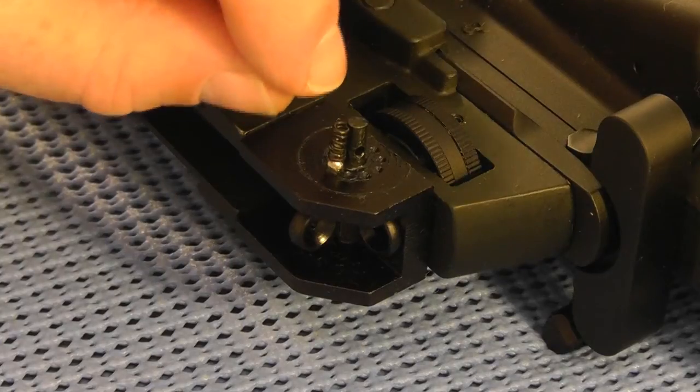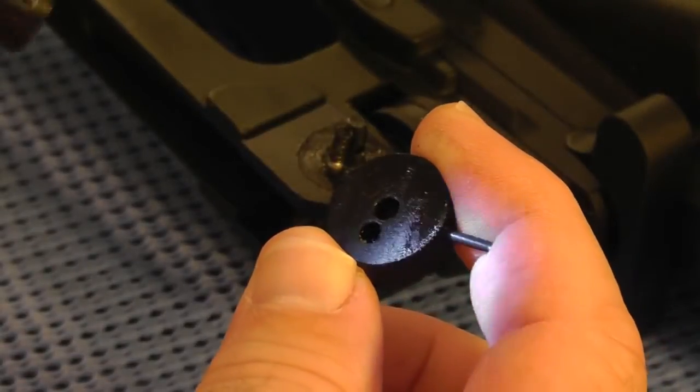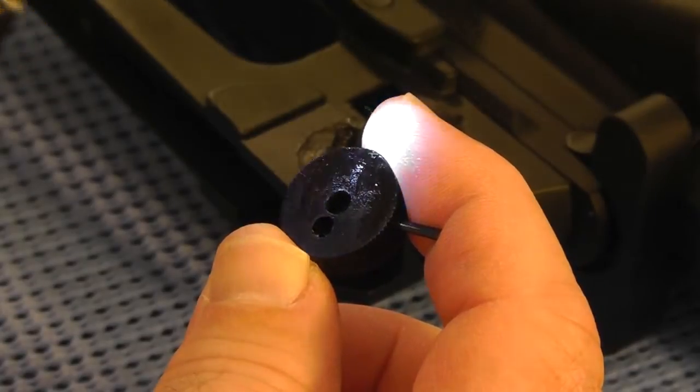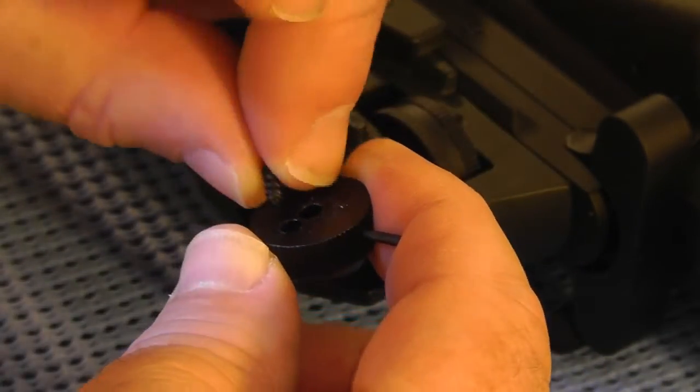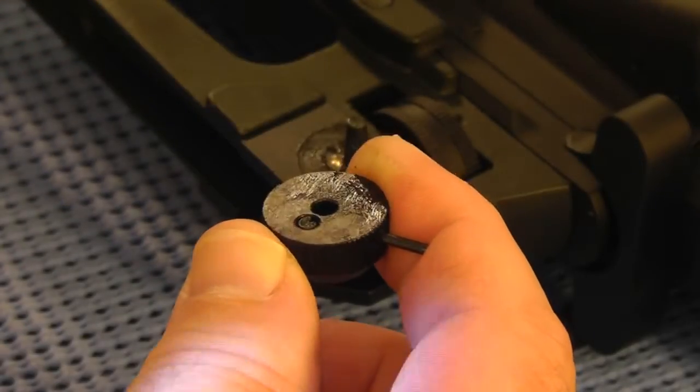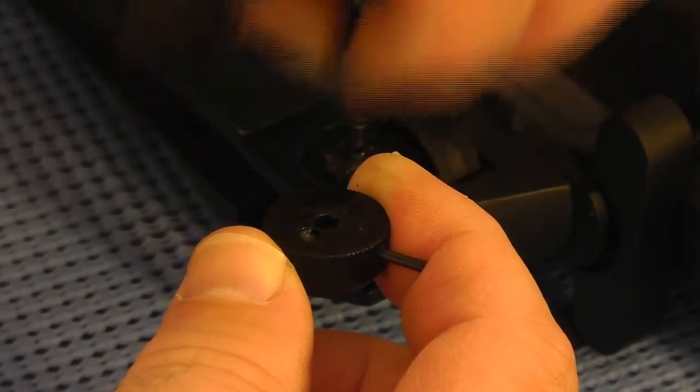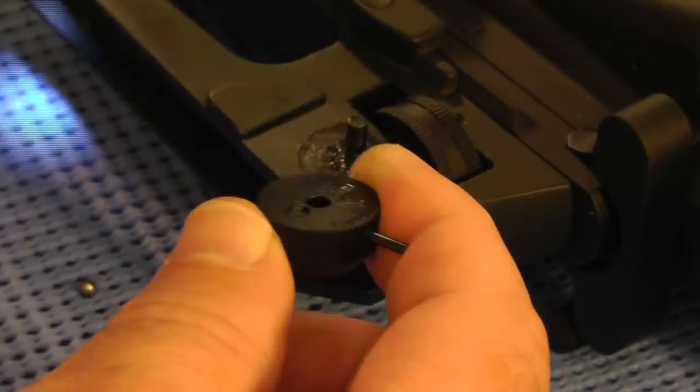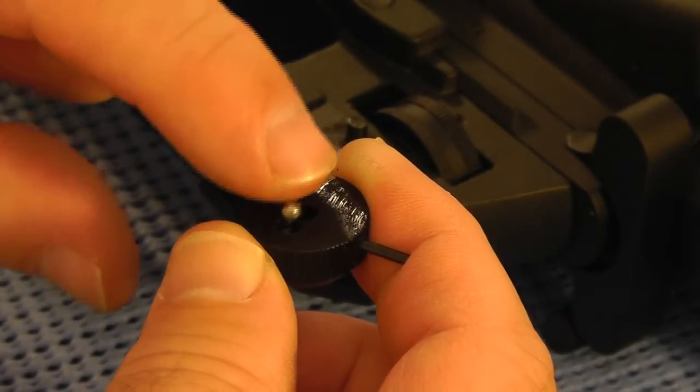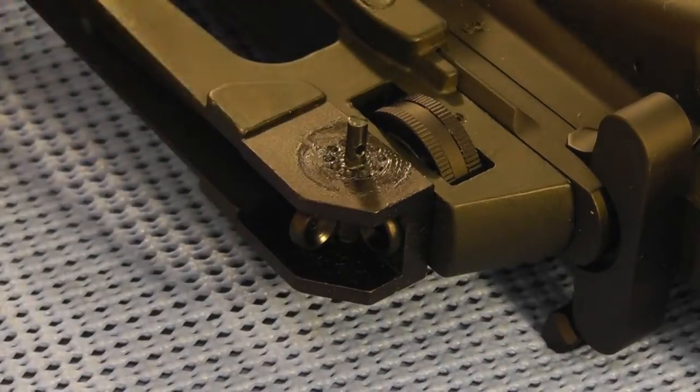So you can see now what we have is the little spring. I'm just going to try to put that back in there. It's funny, on black objects I don't think you can get enough light. That little ball is going to be easy to lose, so be careful not to lose that. Okay, so now we just have to back out this screw.